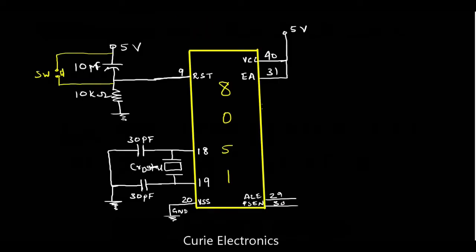In the last class we learned the oscillator circuit — that is the crystal and the two capacitor circuit. Here we are using an 11.0592 MHz crystal. Then we have the reset circuit: a 10uF capacitor and 10k ohm resistor work as a reset circuit. And the EA pin, that is pin number 39, the enable access pin, should be connected to positive 5V. So the last class we made the microcontroller ready for the application.